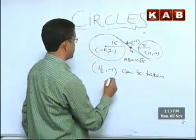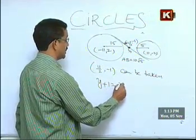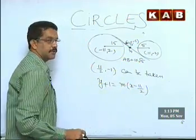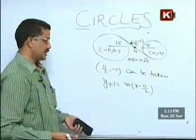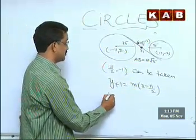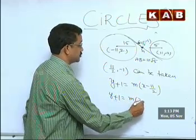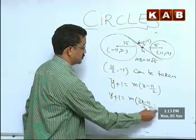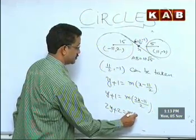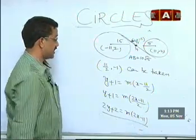A line passing through (11/2, -1) can be taken as y + 1 = m(x - 11/2). I don't know the slope m yet — I need to find it. Simplifying: y + 1 = m(2x - 11)/2, so 2y + 2 = m(2x - 11). This is the equation of the tangent.